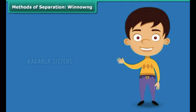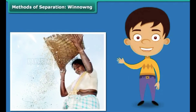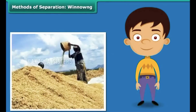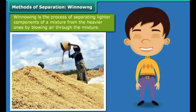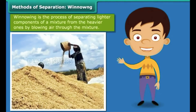During your numerous train trips down your countryside, you would have noticed women standing at a height, shaking a basket held over their heads continuously. They are separating the grain from the husk by simply allowing the wind to blow away the husk and other lighter impurities.